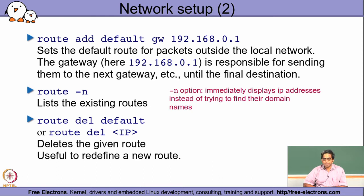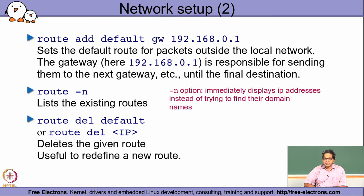If I want to delete a route, I have an option to specify del as the operation to the route command — instead of add, I say del. I then specify which route to delete: it could be the default gateway that was previously configured, or any other route, specifying the corresponding IP. The set of routes determines how packets actually go out into the system, and we will talk more about routing subsequently in the course when we cover the network layer.